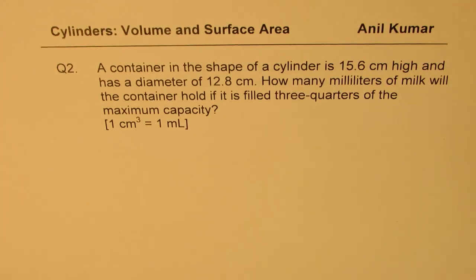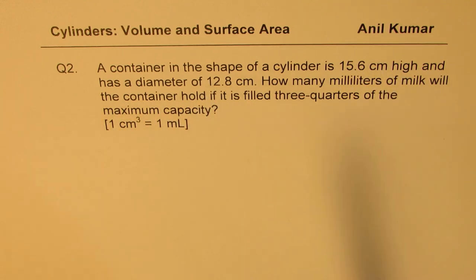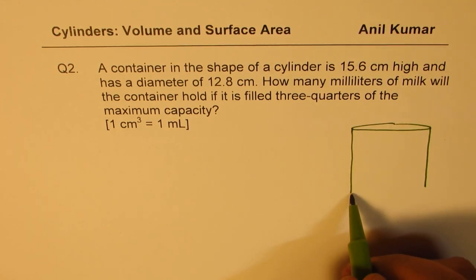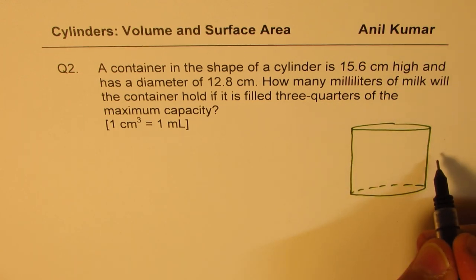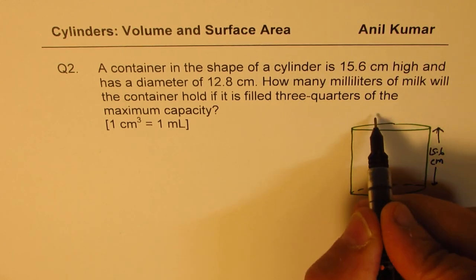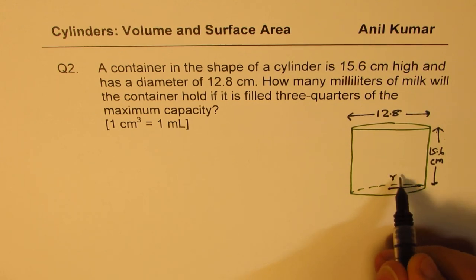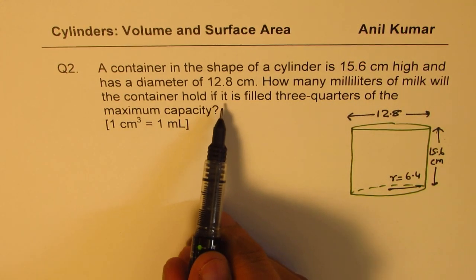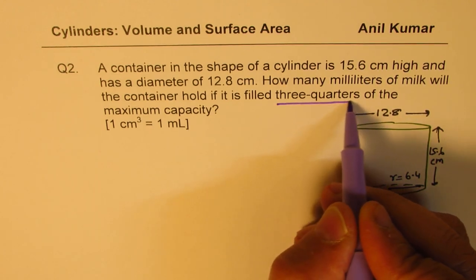Now let's take question number 2. A container in the shape of a cylinder is 15.6 centimeters high and has a diameter of 12.8. So let's again make a cylinder. The height is given to us as 15.6 centimeters and the diameter is 12.8. If diameter is 12.8, half of this will be the radius, so radius will be 6.4. How many milliliters of milk will the container hold if it is filled three quarters of the maximum capacity?